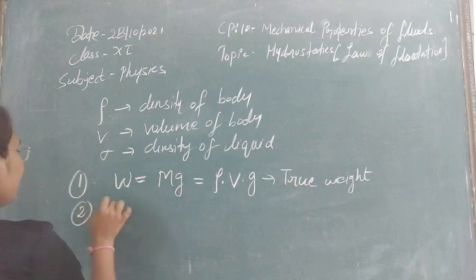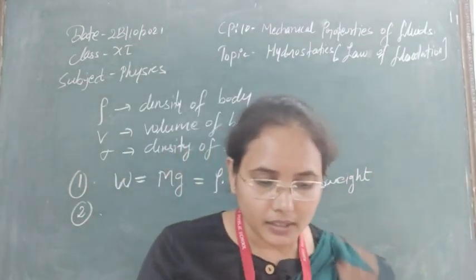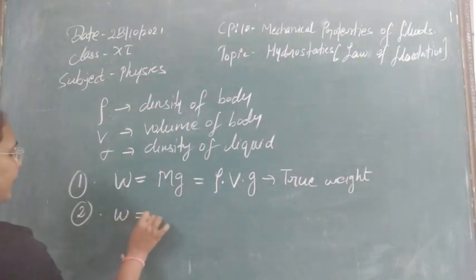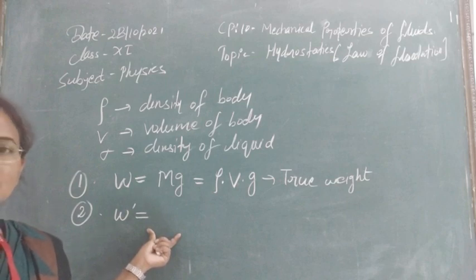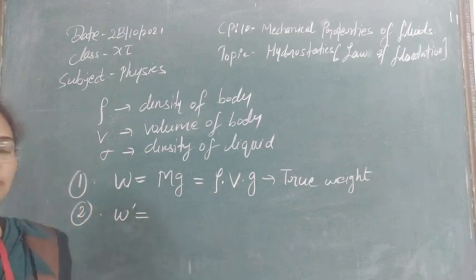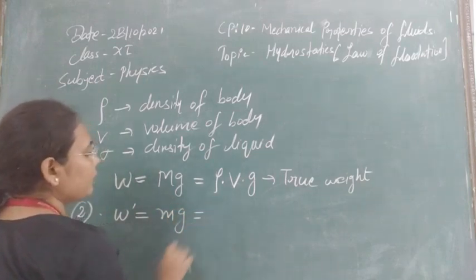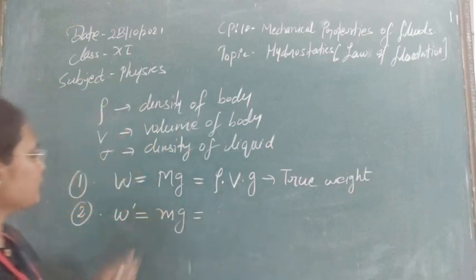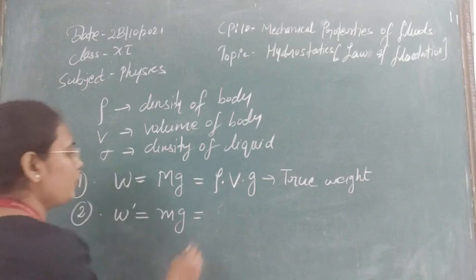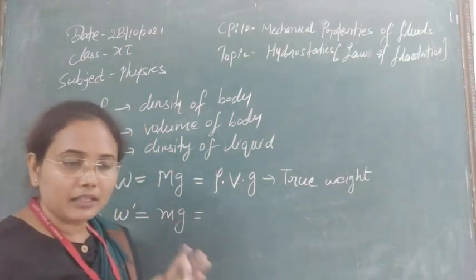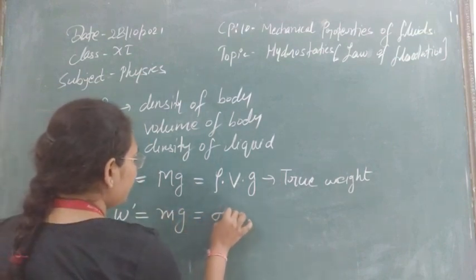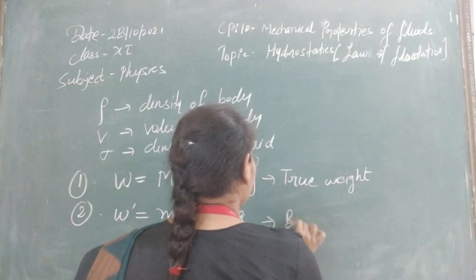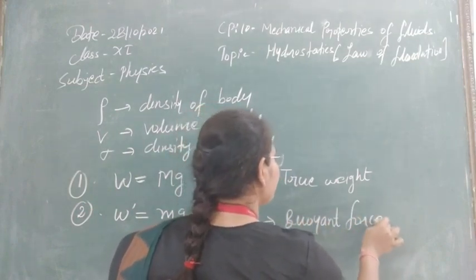The second force acting on the completely immersed body is the buoyant force or upward thrust. The buoyant force equals the weight of liquid displaced. If mass m of liquid is displaced, its weight equals sigma times V times g, where V is the volume of the body. This is the buoyant force acting upward.